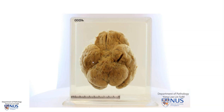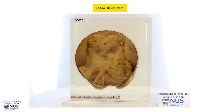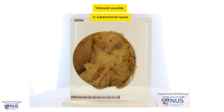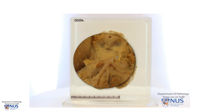Here are the frontal lobes, the temporal lobes. This is the region of the optic chiasma. And we have here the pons, the cerebral peduncles. We can see that there is a pale yellowish exudate in this region, and this exudate lies within the subarachnoid space. So it is a type of meningitis because there is an inflammatory exudate within the subarachnoid space.